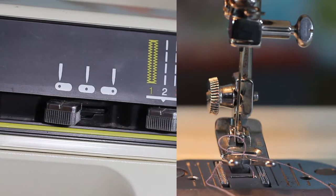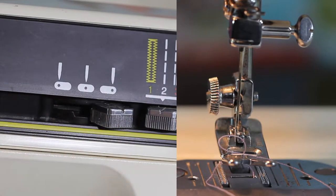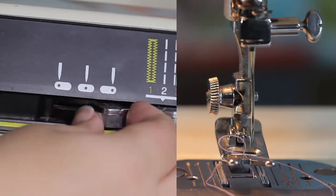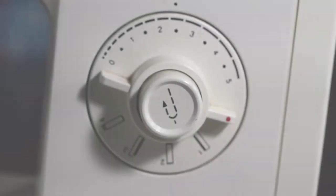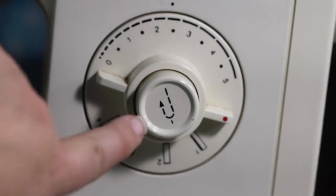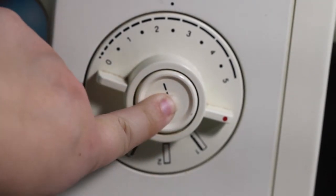This dial here allows you to change the position of the needle from center to either right or left. To run the machine in reverse, hold the reverse arrow button on the length adjustment dial while using the foot pedal.